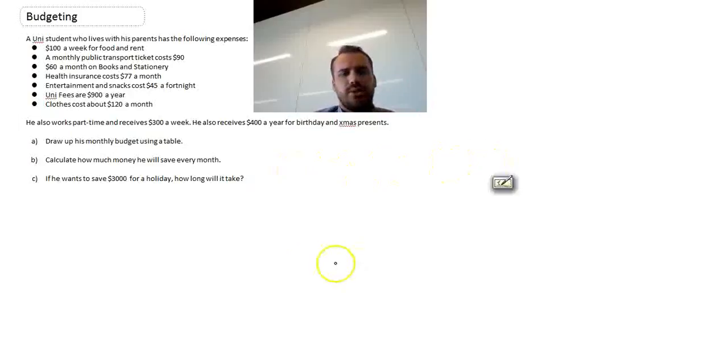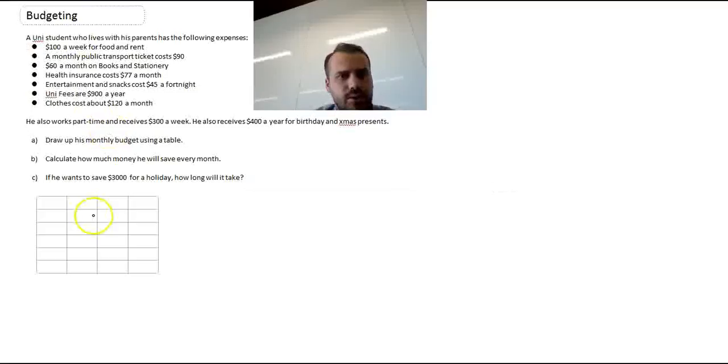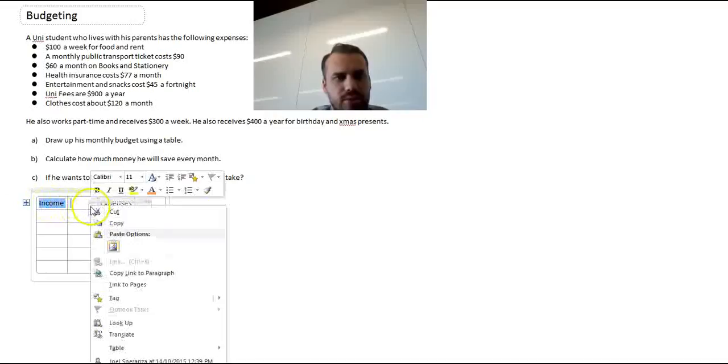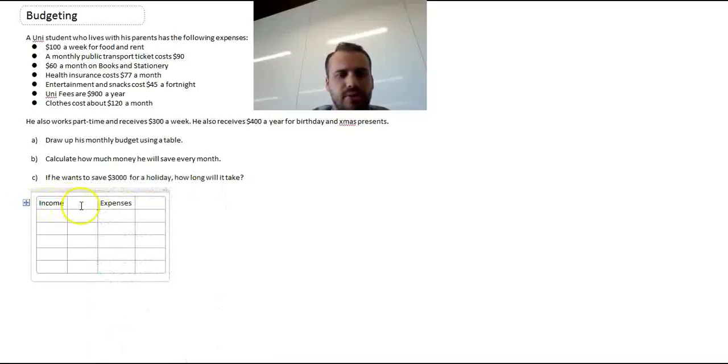Alright, let's jump straight into it. Now when you draw up a table, it's going to look something like this. So here's our table here, it's going to have four columns. Now the left-hand two columns are going to be your income and amount, and these ones are going to be your expenses. Now we're going to start filling this stuff in.